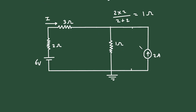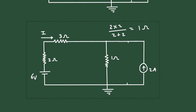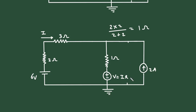Again we can convert this current source into its equivalent voltage source. So here this will be a voltage source and the direction will be like this. Voltage V is equal to I into R. The value of current I is 2 ampere multiplied by resistance 1 ohm, so 2 into 1 is 2 volt. This voltage is 2 volt. Now we can remove this current source from here.